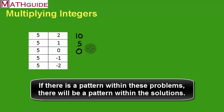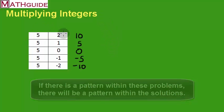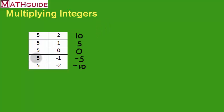So if I subtract five from zero, the only number that makes sense is negative five. And again, if I take negative five and subtract five, I'm going to get negative ten. This table demonstrates what happens when you multiply a positive number times a negative number. You can see a positive times a negative is a negative.